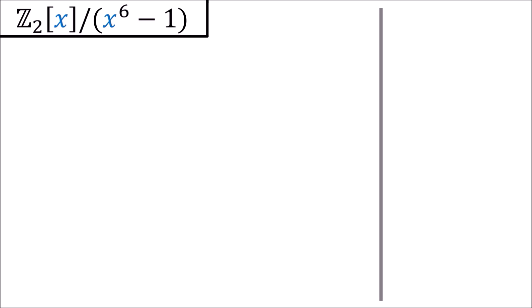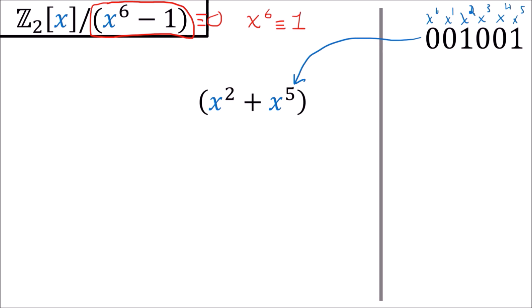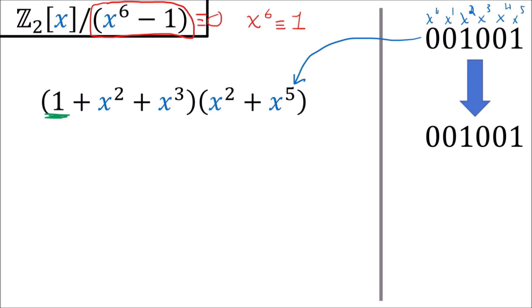Let's see an example. With six-digit codewords, we work mod x^6 minus 1, so x^6 is equivalent to 1. Take the codeword 001001, which corresponds to the polynomial x² + x^5. Multiplying this valid codeword polynomial by any other polynomial gives another valid codeword. Let's multiply by 1 + x² + x³, and first get a sense of what this means in terms of circular shifts. The '1' term gives us a copy of the original codeword polynomial x² + x^5.